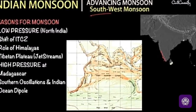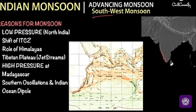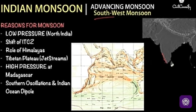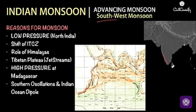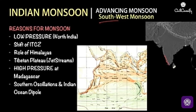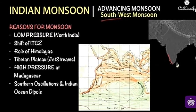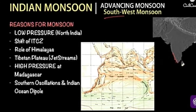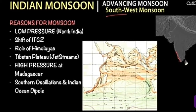Welcome back children to this third module. Here we are going to discuss about the Indian monsoon — we say a southwest monsoon. The southwest monsoon in India is divided into two branches: the Arabian Sea branch and the Bay of Bengal branch.